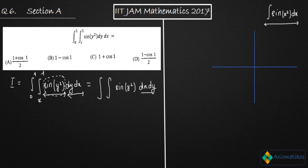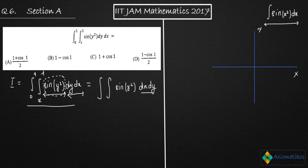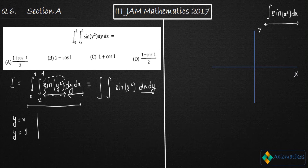I have drawn a Cartesian plane. This is your x-axis and this is your y-axis. To change the order of integration, we identify the limits. From the original integral, the inner limits are for y: y goes from x to 1, and the outer limits give x from 0 to 1.